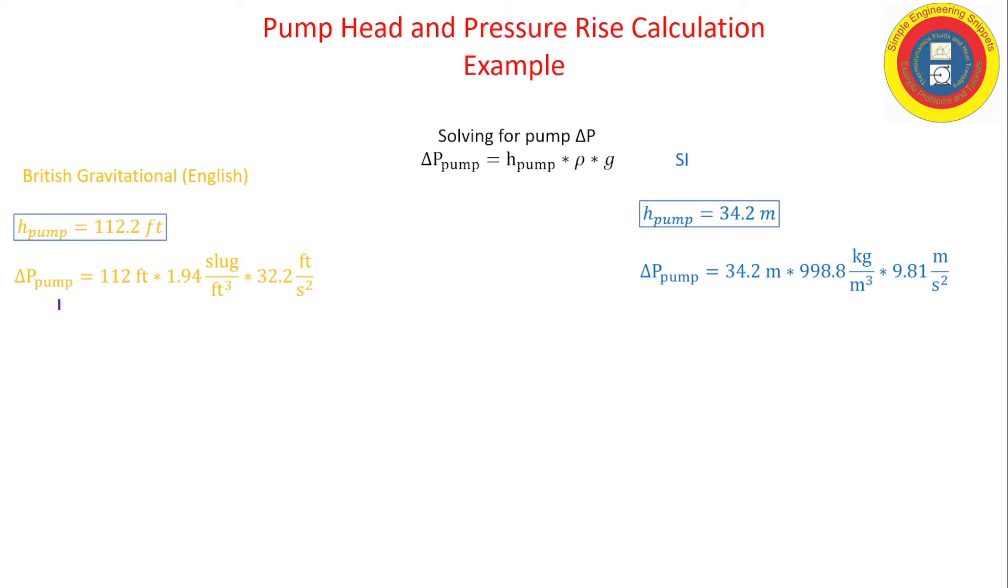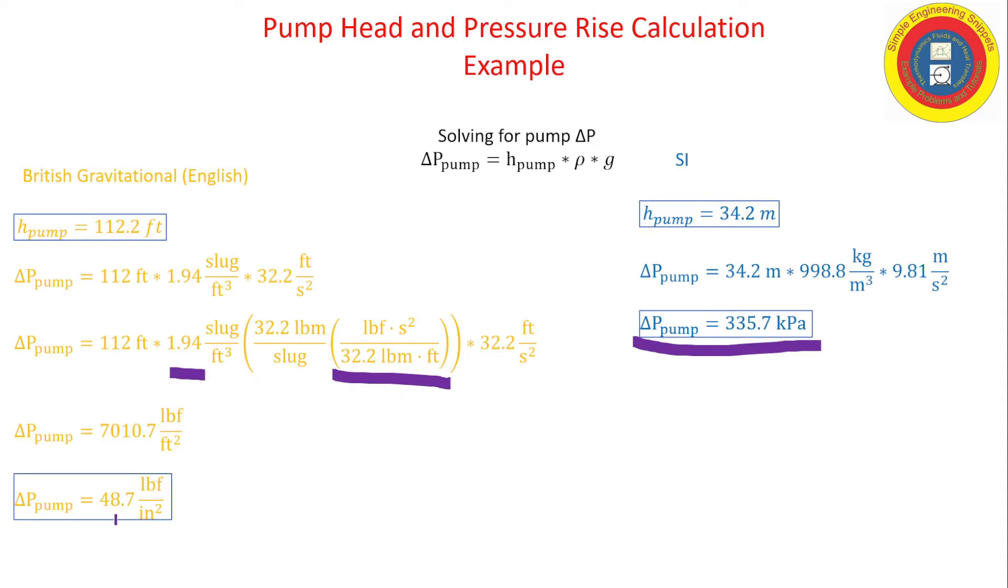We'll be doing it with the English engineer or British gravitational on the left and the SI on the right. As you can see, the SI, as is typical, pretty straightforward. Still got some work to do, some unit conversions, g sub c. And when we're done, we get the pressure rise is equal to roughly 49 psi and 336 kilopascals. Okay, so all that was done for a specific gravity of one.